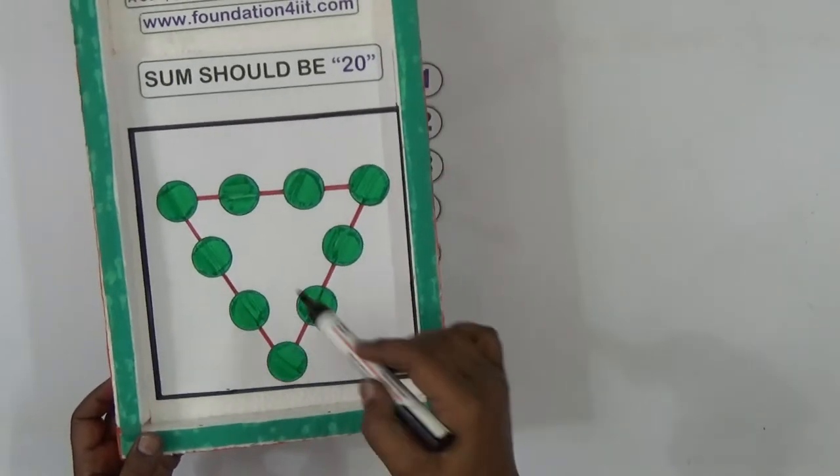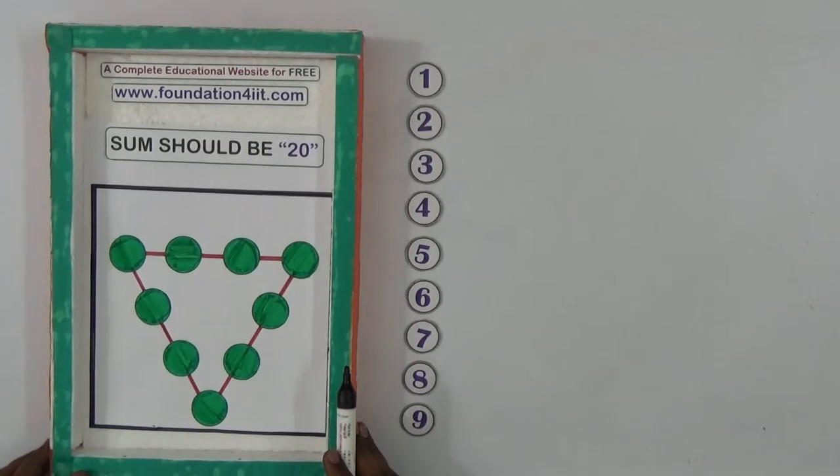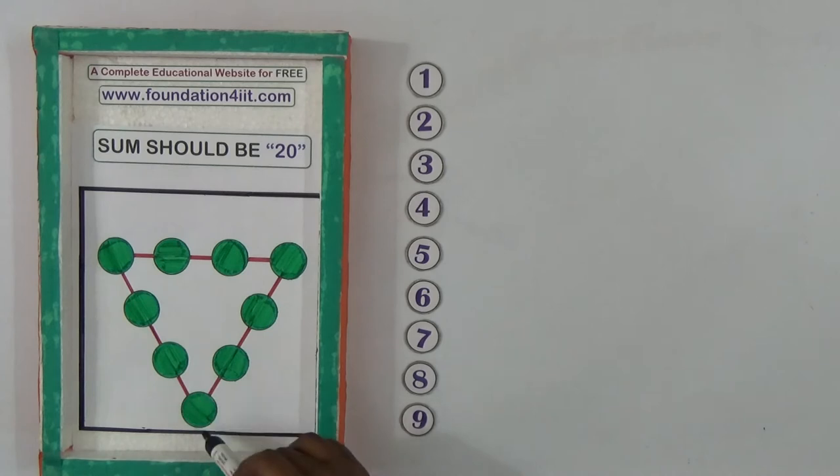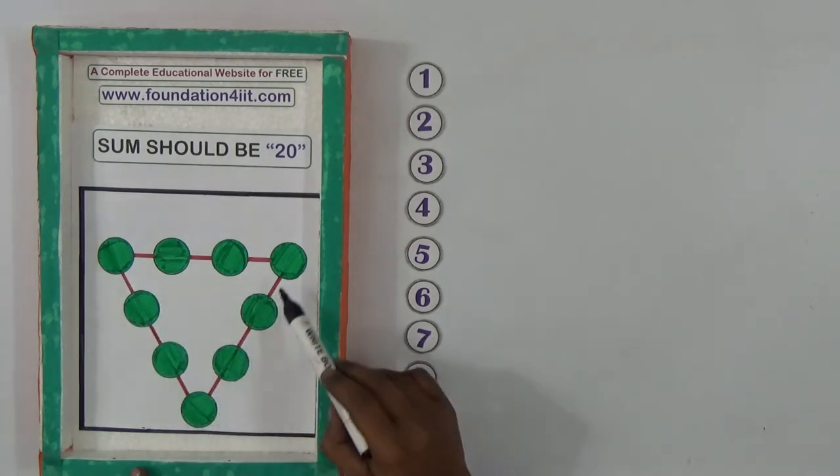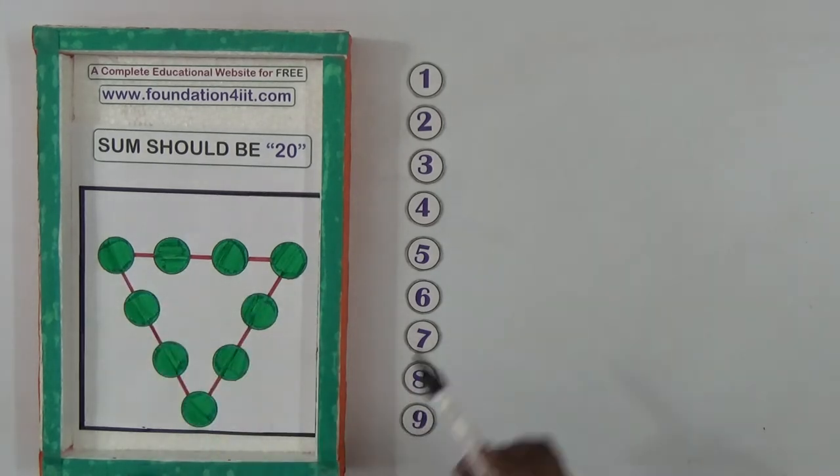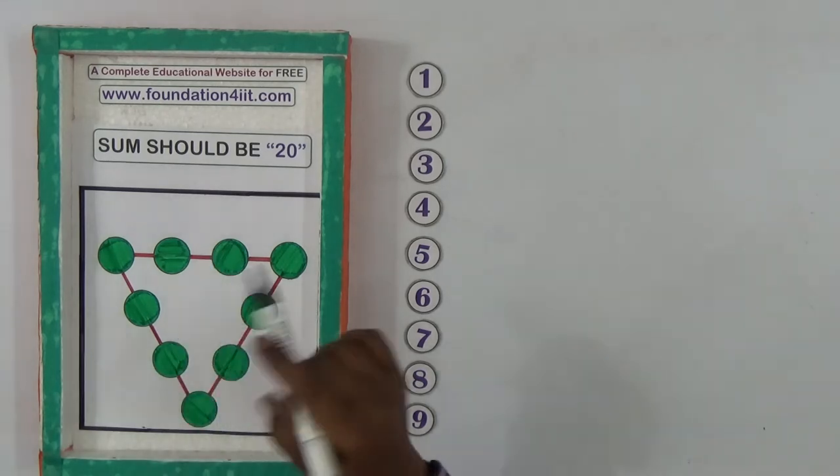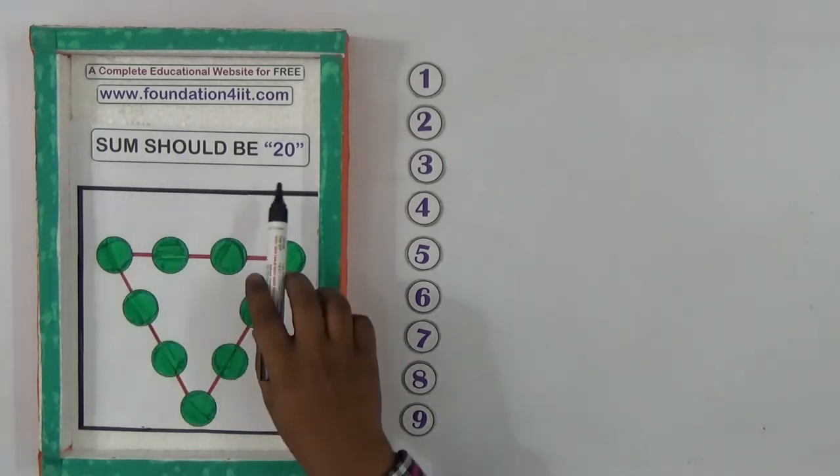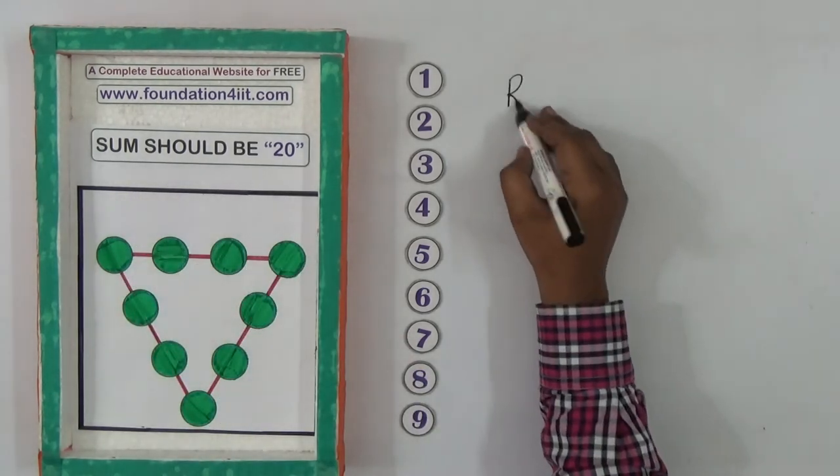There are three straight lines because it's a triangle shape. Each straight line has four circles. We need to arrange these nine numbers in these nine places so that every straight line sum equals 20. Here are the rules.